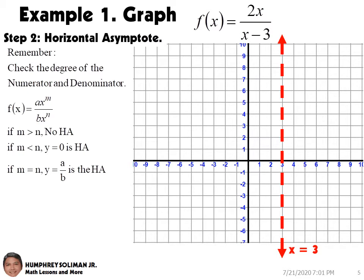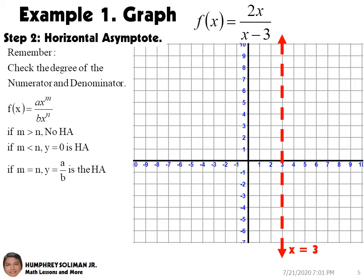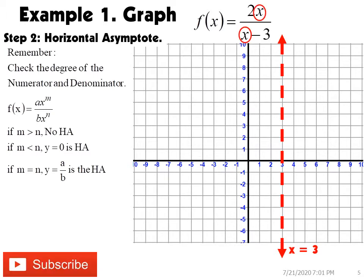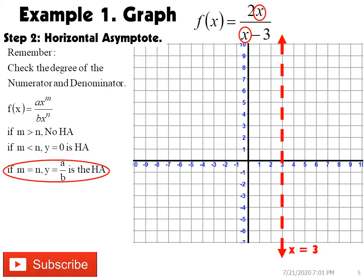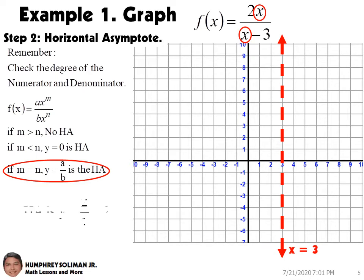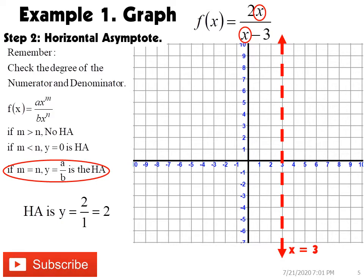For step number two, we need to find the horizontal asymptote for this rational function. To do that, we need to check the degree of the numerator and the denominator. As you can see, the degree of the numerator and the denominator for this rational function is the same. When that happens, our horizontal asymptote will be y equals positive 2.